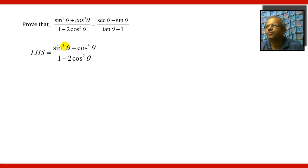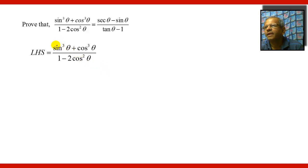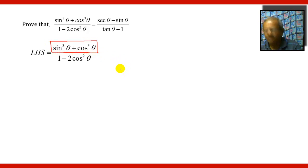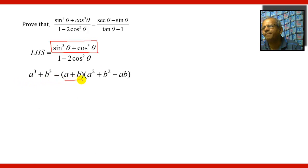LHS is equal to sin³θ + cos³θ upon 1 minus 2cos²θ. Here, sin³θ + cos³θ can be written in the form of a³ + b³ = (a + b)(a² + b² − ab).